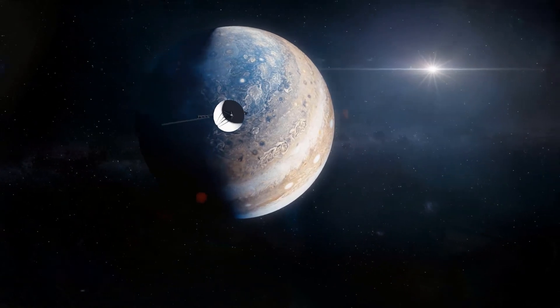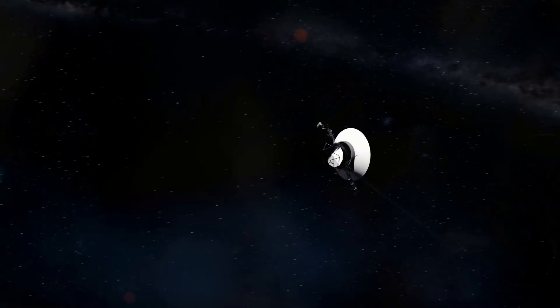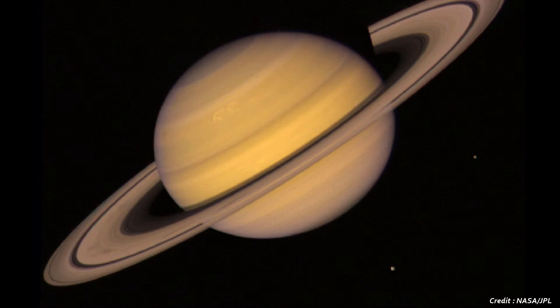Voyager 1 eventually completed its flyby in early April 1979, and continued on to the second-largest gas planet in our solar system. Nearly 20 months later, on the 9th of November 1980, Voyager 1 finally reached the ringed world of Saturn.